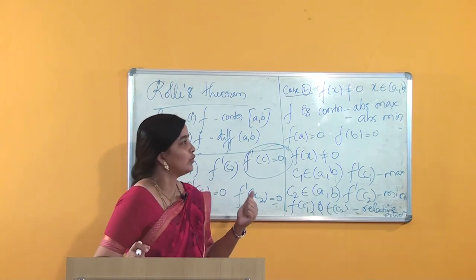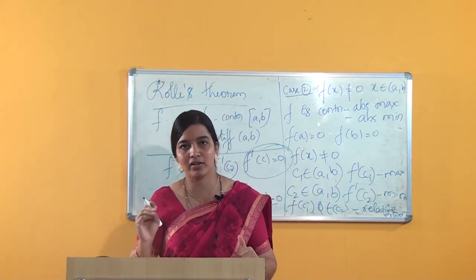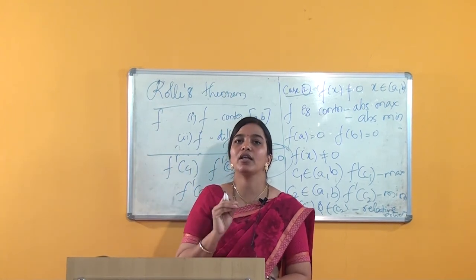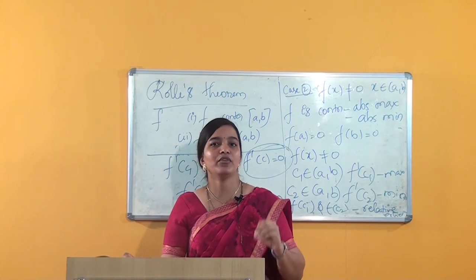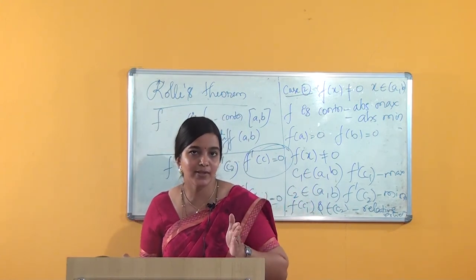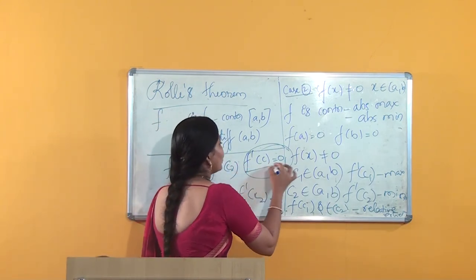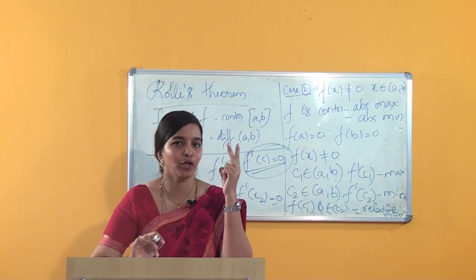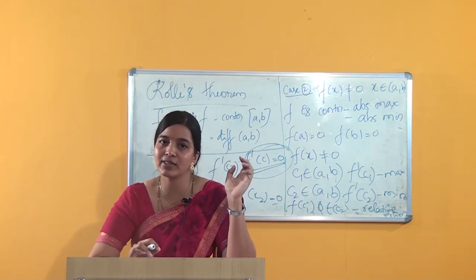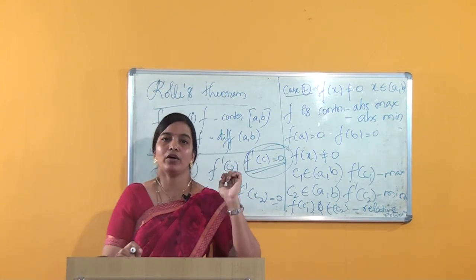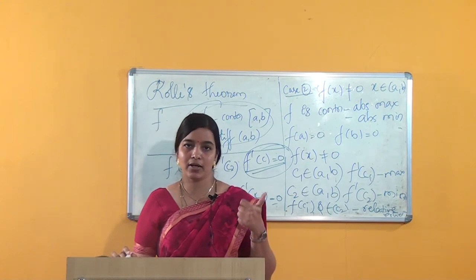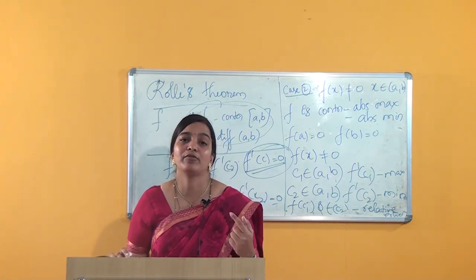Let me revise the whole theorem. Rolle's theorem is a very important theorem. The statement says: if the function f is continuous on the closed interval [a, b], differentiable on the open interval (a, b), and f(a) = 0 and f(b) = 0, then we can find a point c such that f'(c) = 0. We considered two cases: when f(x) = 0 for all values of x, we used the two conditions — continuity and differentiability — to obtain f'(c) = 0.